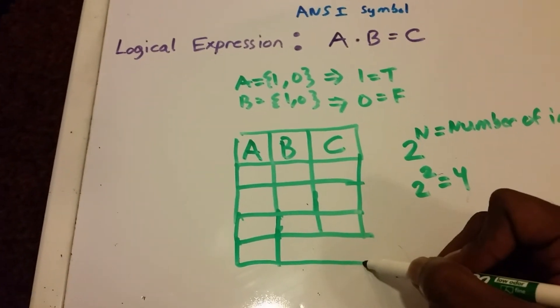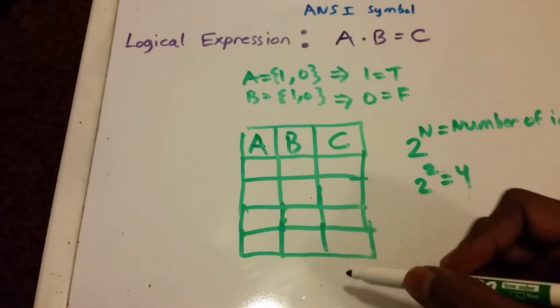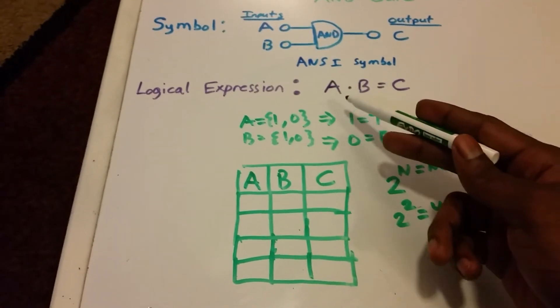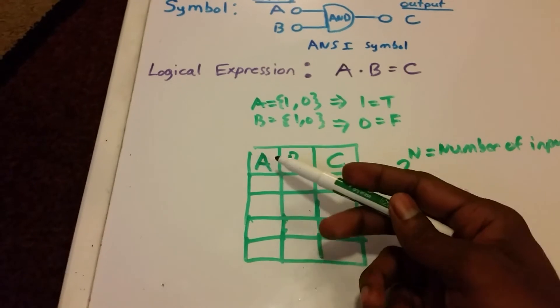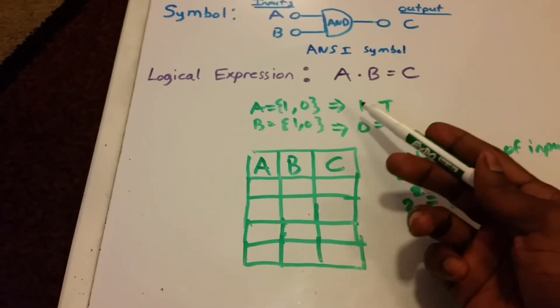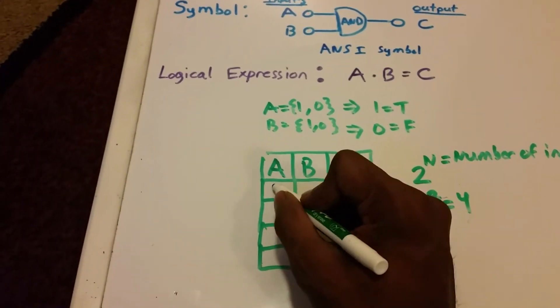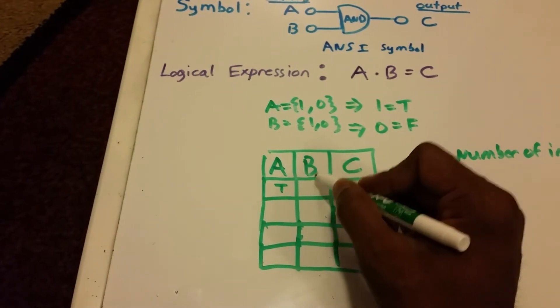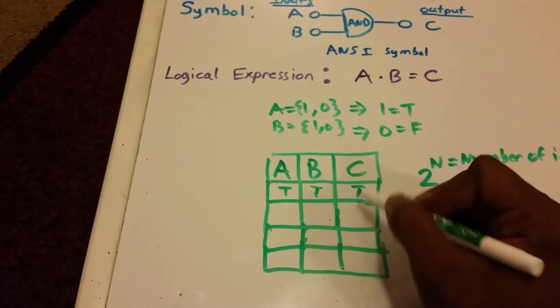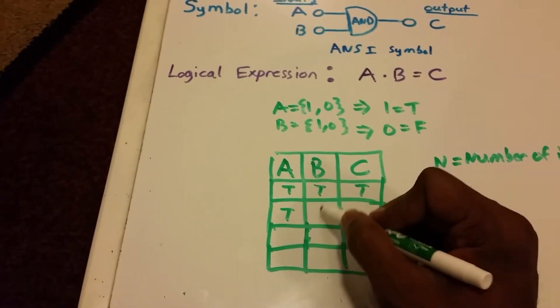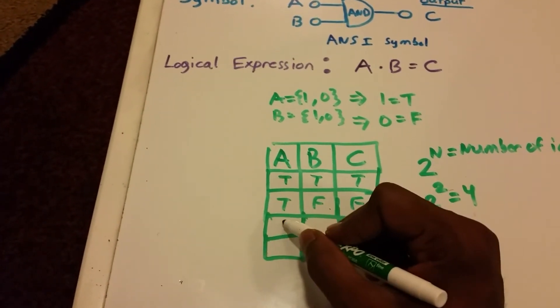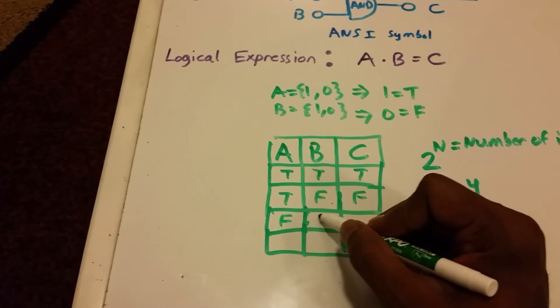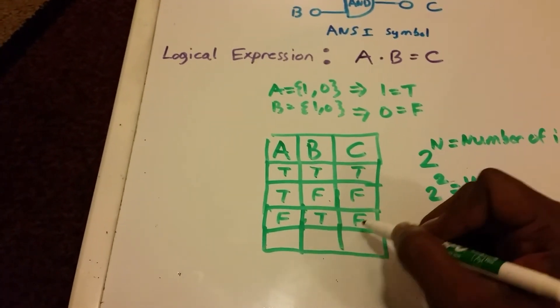Now, again, we can use our logical expression to calculate our output. So if A was true and B was true, then our output is true. If A was true and B was false, then our output is false. And if A was false and B was true, then our output is false as well.